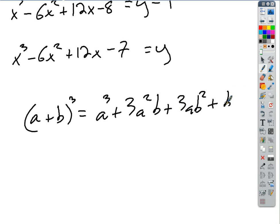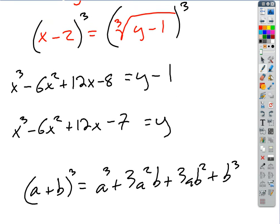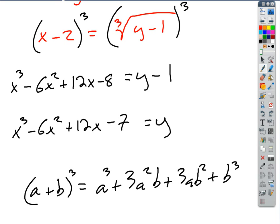So for us, instead of a's and b's, we would have had a was x, b was negative 2, x plus negative 2 cubed, and just make those substitutions. But either way, you're going to get that answer. That's it, right? That's all we do. We just switch the x's and the y's, solve for the new y. Let's try a little more of those.